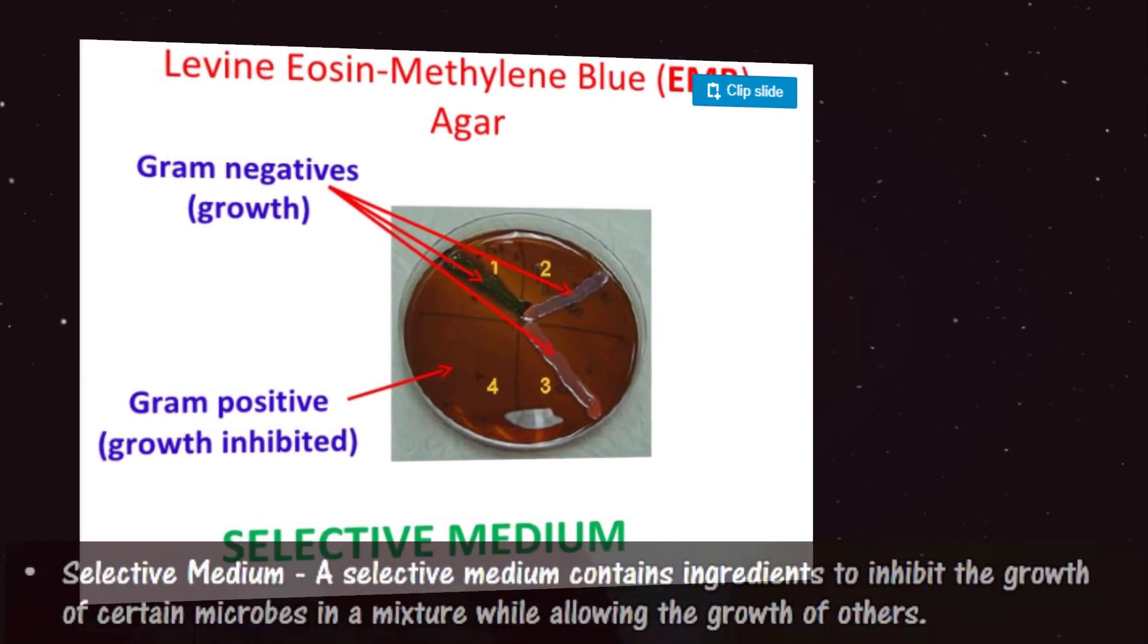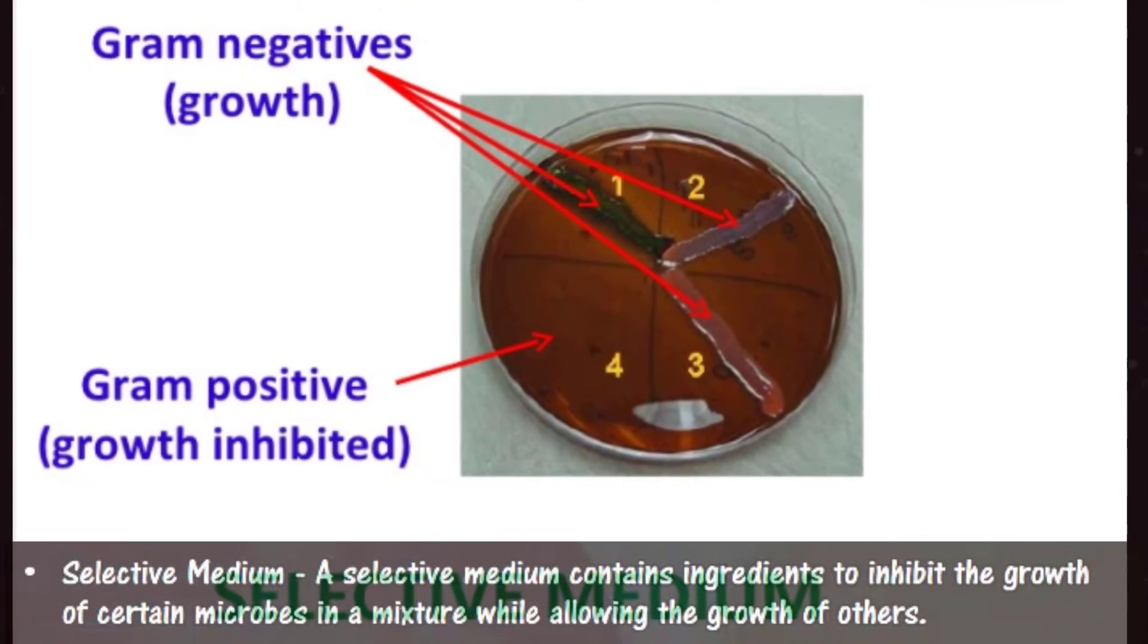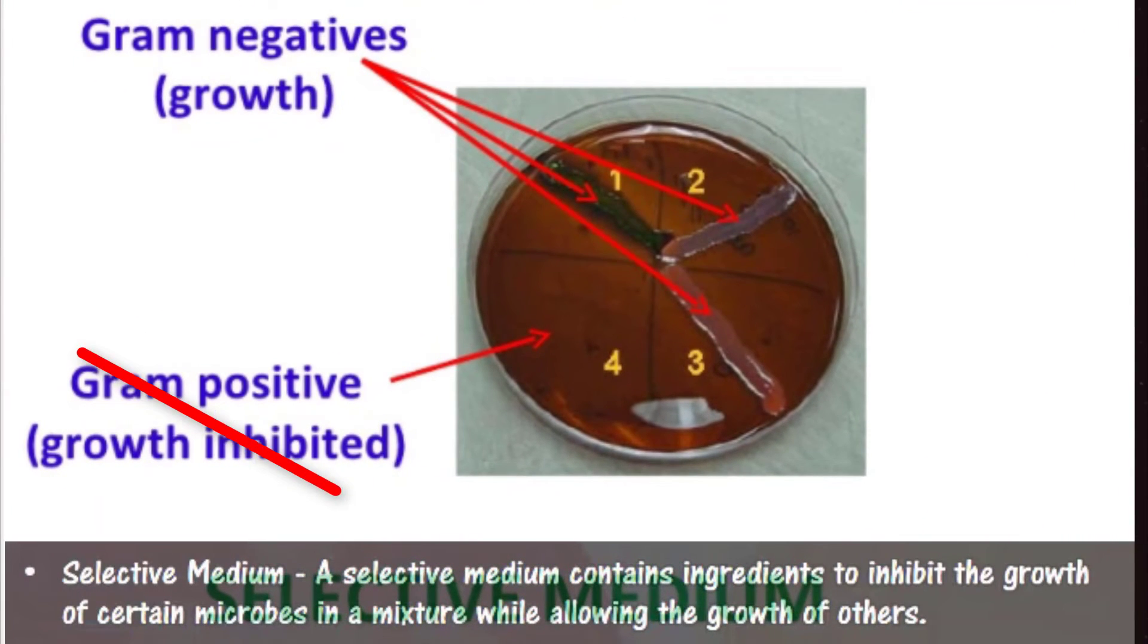A selective medium contains ingredients to inhibit the growth of certain microbes in a mixture while allowing the growth of other microbes.